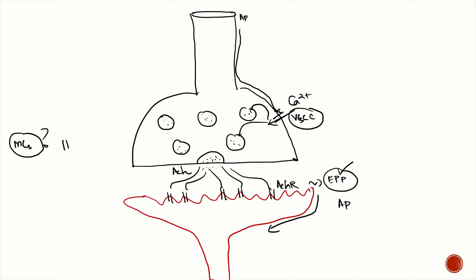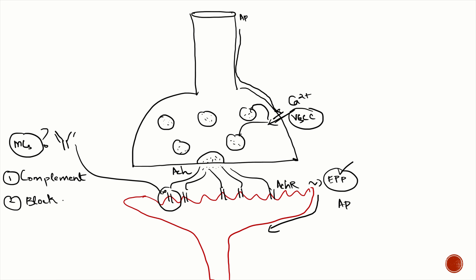In myasthenia gravis, antibodies are directed against the acetylcholine receptors. These antibodies cause three things: complement-mediated injury to the postsynaptic muscle membrane; blocking of the acetylcholine binding site, preventing ACh from binding; and increased turnover of acetylcholine receptors through antibody-mediated endocytosis and cross-linking.